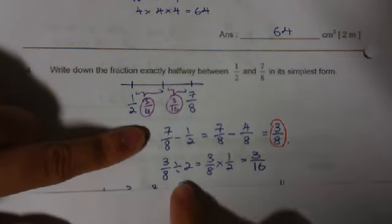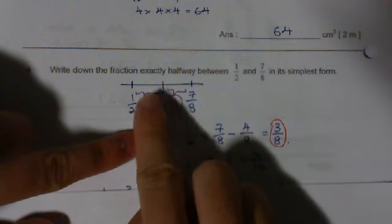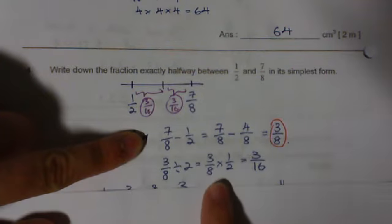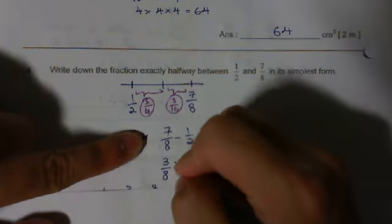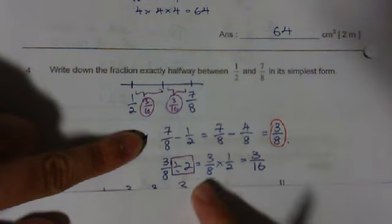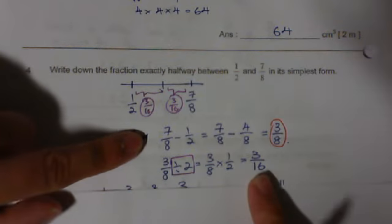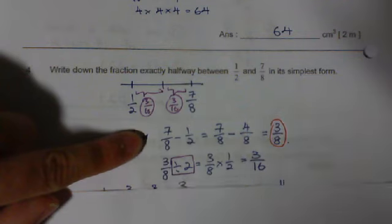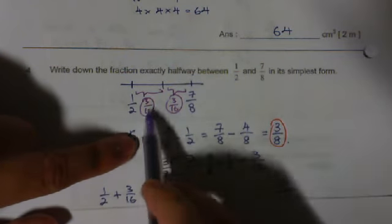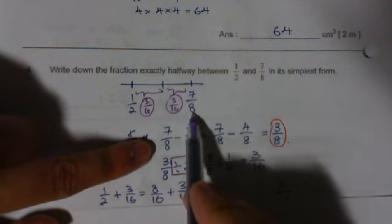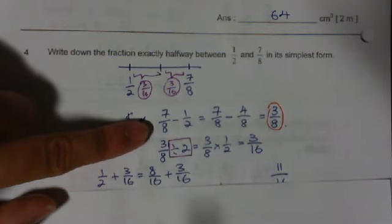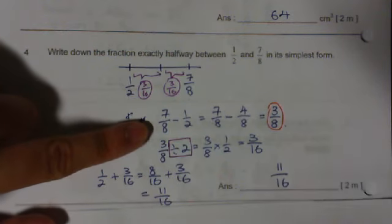Now, this 3 over 8 I got to divide it by 2 so that I find the gap in between. So, 3 over 8 divided by 2 equals 3 over 8 times 1 over 2. This is basic division of fractions. We have learned this before. Equals 3 over 16. So I know the gap in between is 3 over 16. I can either take half plus 3 over 16. I find this or I take 7 over 8 minus 3 over 16. I'll get the same answer. So I took half plus 3 over 16. I'll get the answer which is 11 over 16.